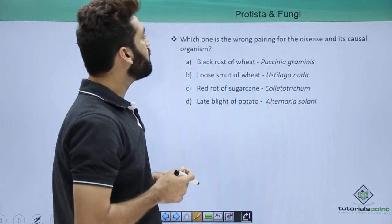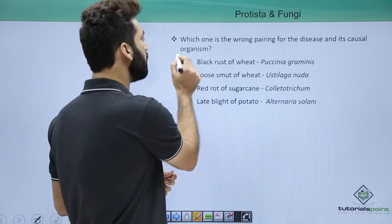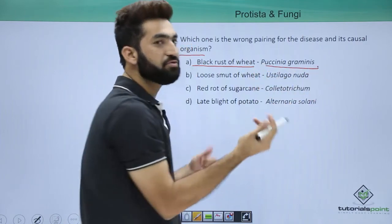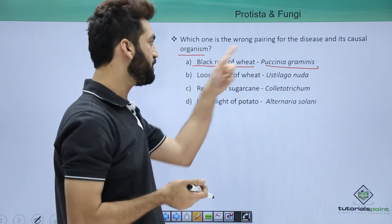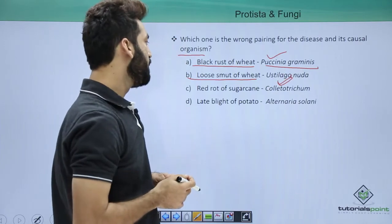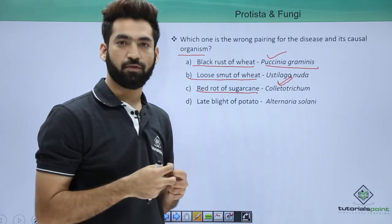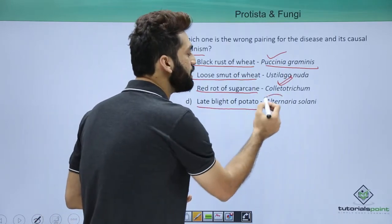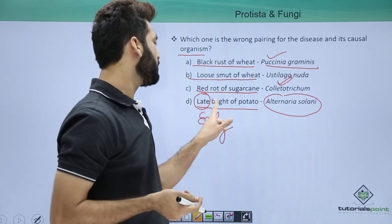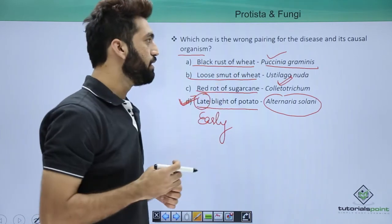Which of the following is the wrong pairing for a disease and its causal organism? Black rust of wheat — Puccinia graminis tritici — is correct. Loose smut of wheat caused by Ustilago nuda is correct. Red rot of sugarcane caused by Colletotrichum falcatum is correct. The wrong match is late blight paired with Alternaria solani — Alternaria solani does not cause late blight, it causes early blight. Late blight should be caused by Phytophthora infestans. So this is the wrongly matched answer.